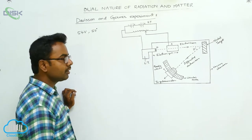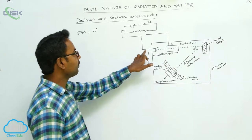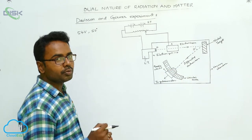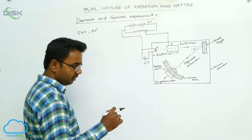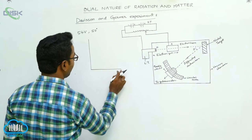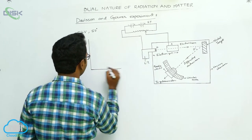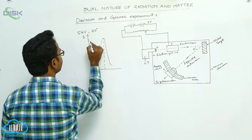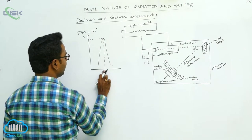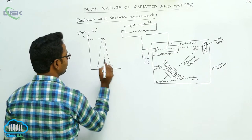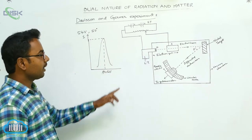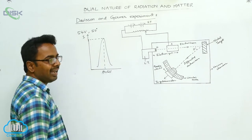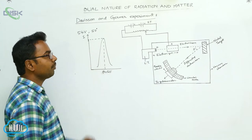Maximum intensity of electrons is obtained when we apply a potential difference of 54 volts between F and A and the angle of scattering is 50 degrees. In such a case, we observe a strong peak in the intensity of electrons. If we plot the graph between intensity on the y-axis and angle of scattering, the maximum intensity is clearly seen at theta equal to 50 degrees with an accelerating voltage of 54 volts.